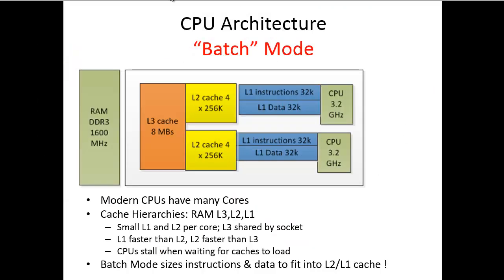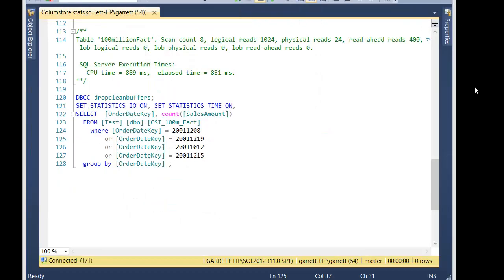Even discounting the column-wise storage in segments and dictionaries, your data would still get processed much faster in batch mode. However, you can only use batch mode with column store indexes — it's automatic functionality. Let me show a bit more about what I'm talking about.